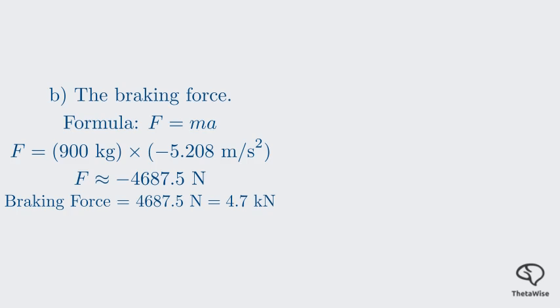For our final calculation, Part C, we'll find the time it takes for the car to come to a stop. Part C is about finding the time T. For this, we can now use the simpler equation of motion. Final velocity equals initial velocity plus acceleration times time. We can use this because we have now calculated the acceleration.